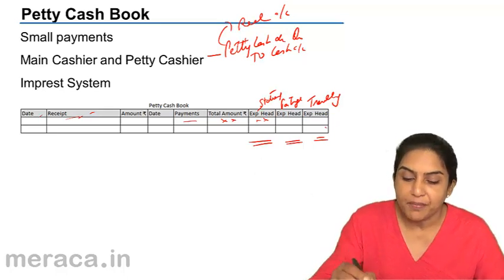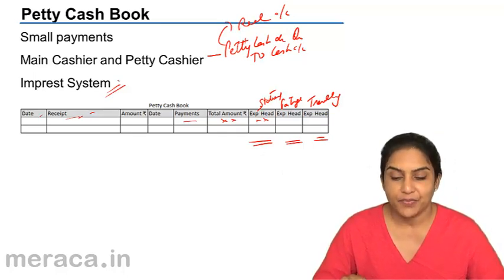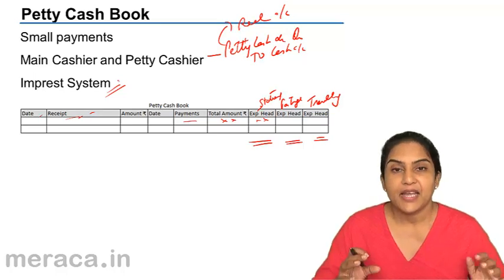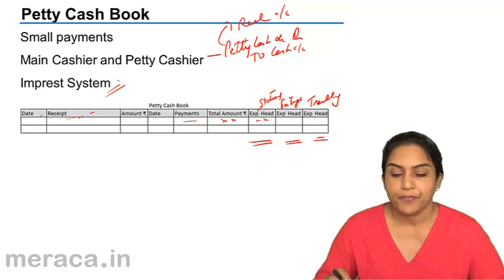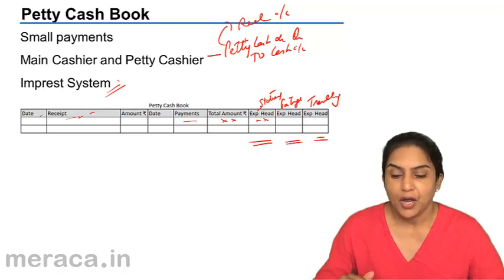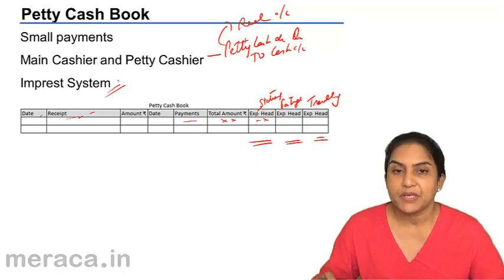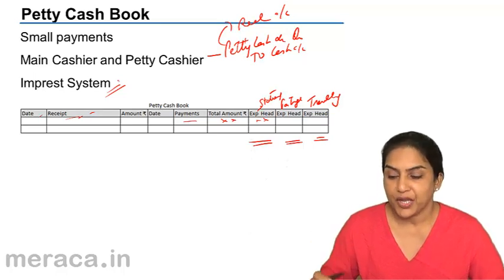This cash book is normally maintained under an imprest system. What is an imprest system? An estimate is made about the petty expenses. The main cashier feels that 10,000 is enough for petty expenses for a fortnight, so 10,000 is handed over to the petty cashier. At the end of a fortnight, whatever expenses the petty cashier has made, he submits the details and shows the petty cash along with all the supporting papers, supporting bills, and supporting invoices.